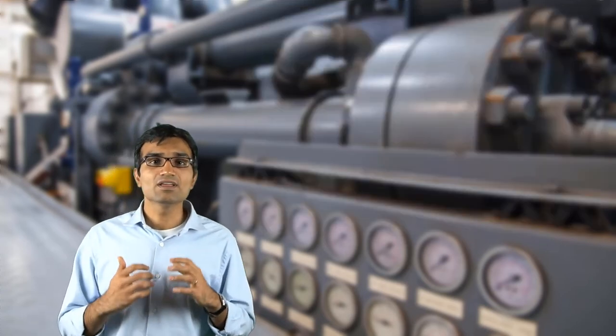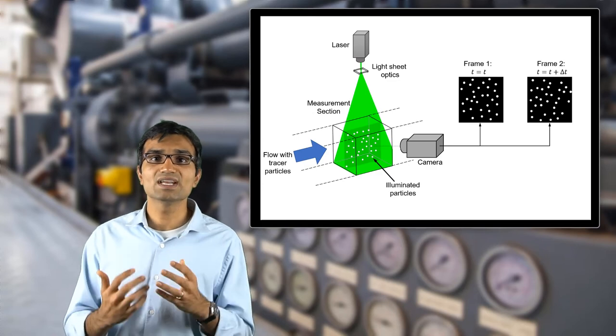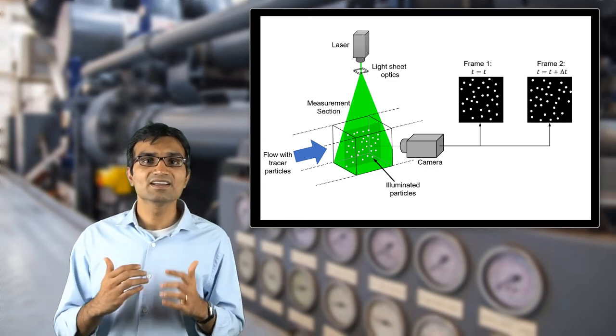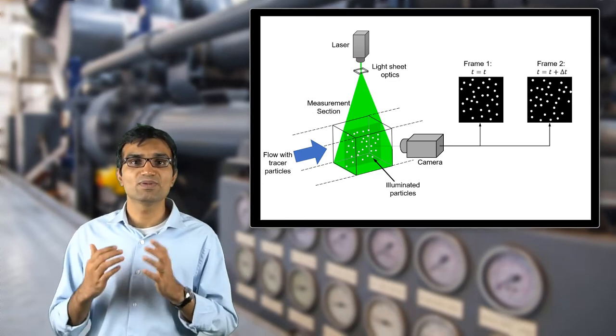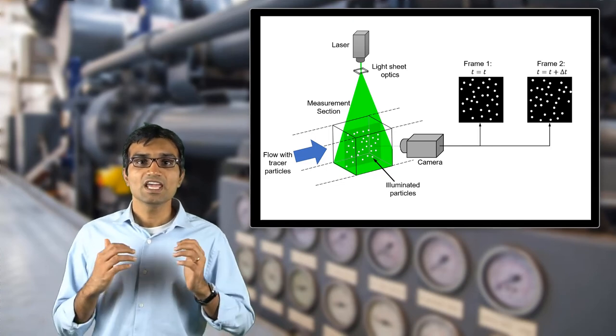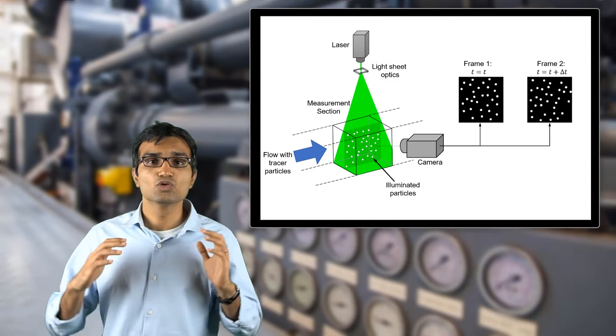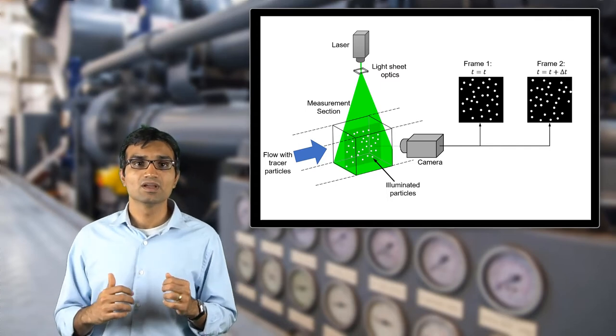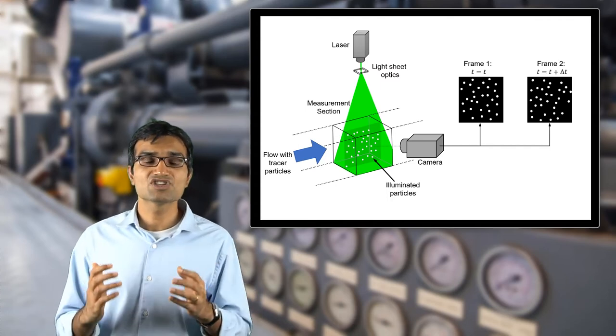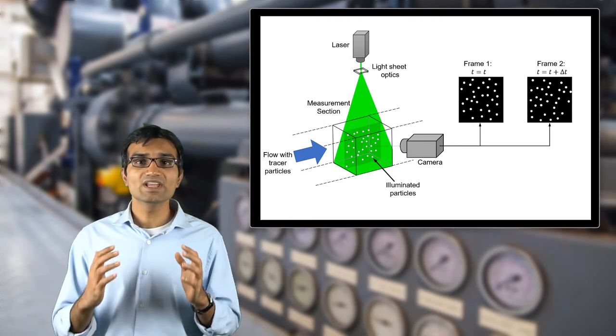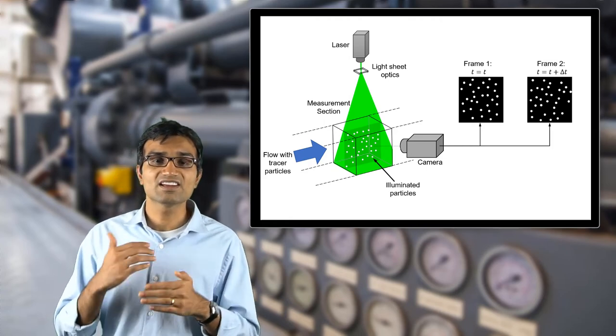Unlike LDV which is a point measurement, we are able to capture 2D and 3D fields using particle image velocimetry, or PIV. In PIV, we use two light pulses from the laser through the trace particles. These light pulses are captured and recorded. The 2D and 3D flow fields are then reconstructed.